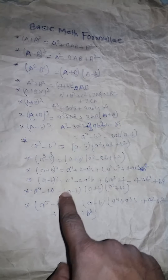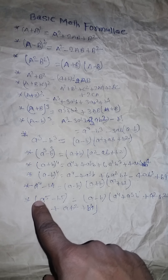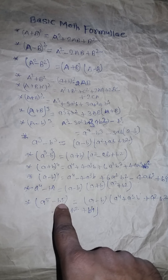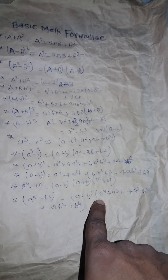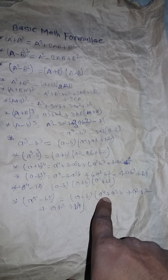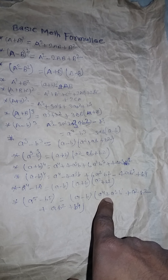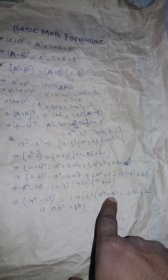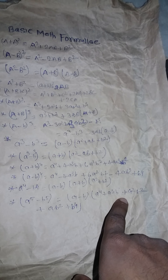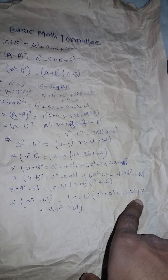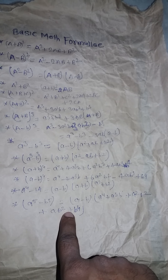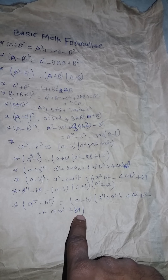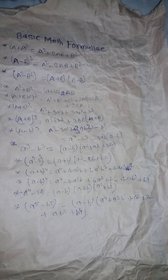And last one: a power 5 minus b power 5 is equal to a minus b into a power 4 plus a cube b plus a square b square plus ab power 3 plus b power 4.